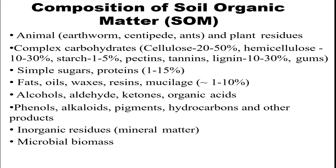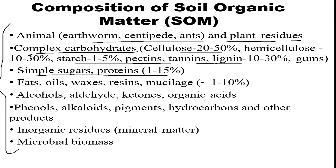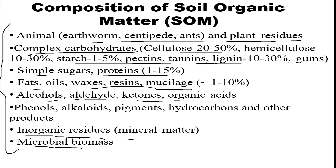Starting with the composition, soil organic matter contains certain animals, mainly earthworms, centipedes, and ants, as well as plant residues. It also contains complex carbohydrates — mainly cellulose, hemicellulose, starch, pectins, tannins, and lignins — and simple sugars, proteins, fats, oils, waxes, resins, mucilage, and alcohols, aldehydes, and ketones.